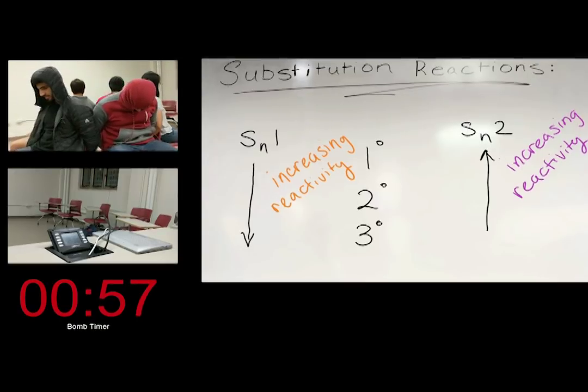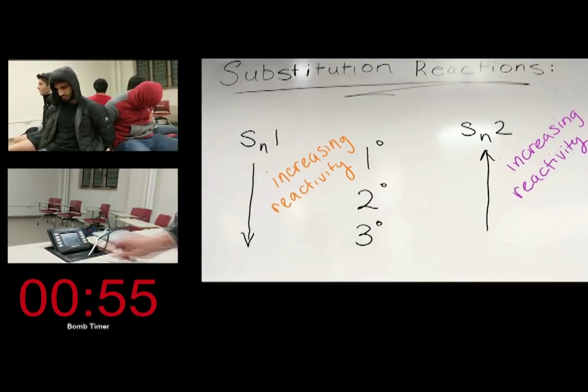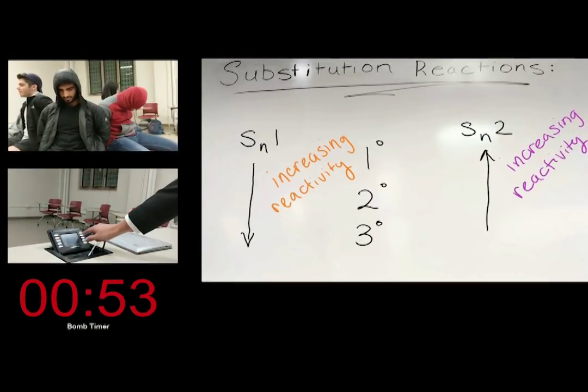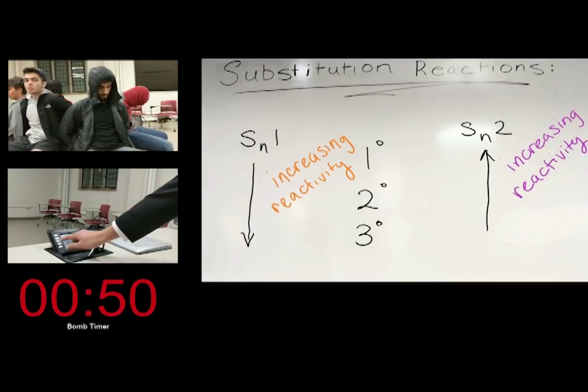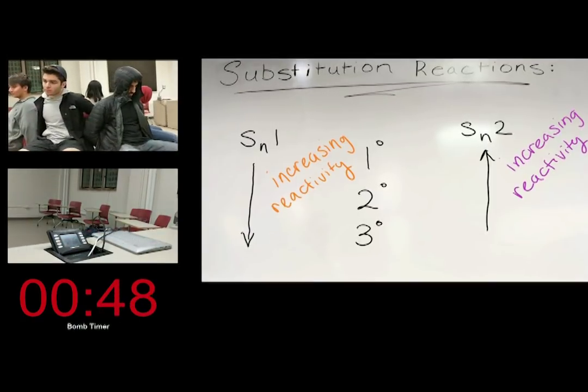On the other hand, SN2 reactions favor primary alkyl halides. There is less steric hindrance or bulk for the nucleophile to attack. An SN2 reaction with the tertiary alkyl halide is basically non-existent.